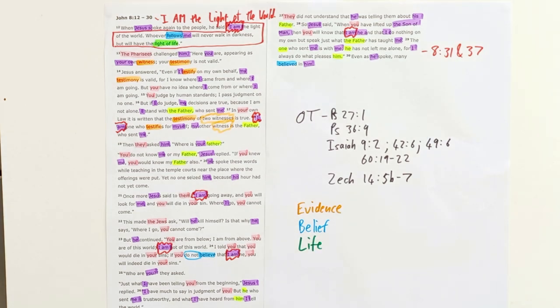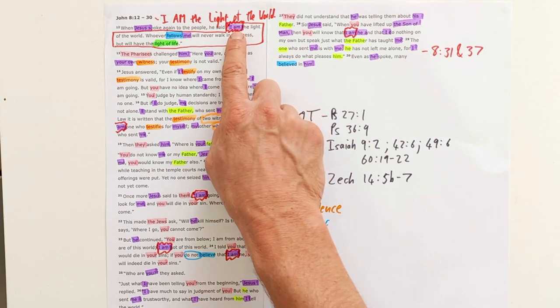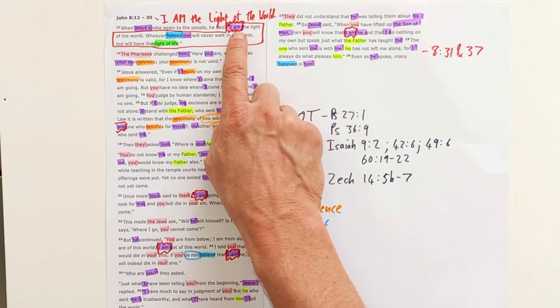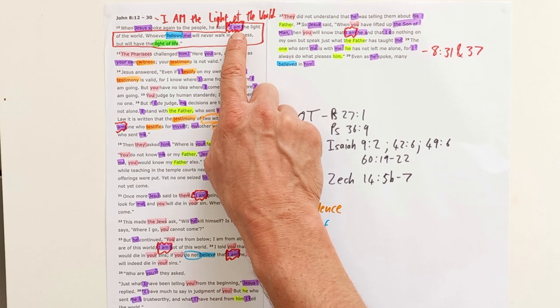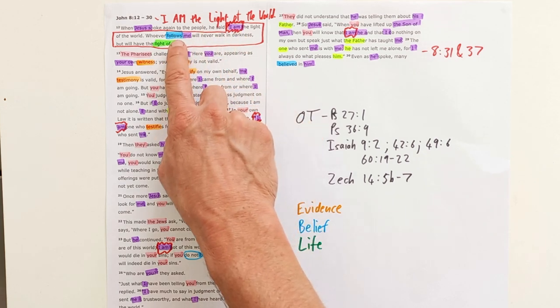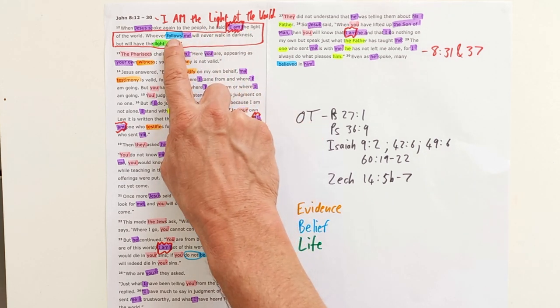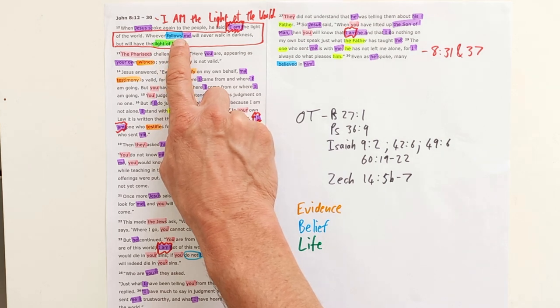So Jesus makes this massive claim 'I am the light of the world.' He's saying he is the great I am, and he then calls people to follow him.